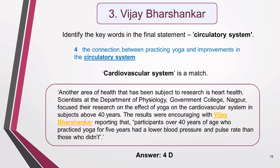This leaves me with one name and one statement. I can assume they match, but I quickly double-check in case I've made an error with a previous match. I identify the key words in the remaining statement first — they are circulatory system. I don't find that exact term in the text, but the term cardiovascular system does appear. Even if I didn't know what either term meant, I could make a good guess from context that they are the same thing. I'm confident the last name and statement match, so the task is complete. The answer is 4D.